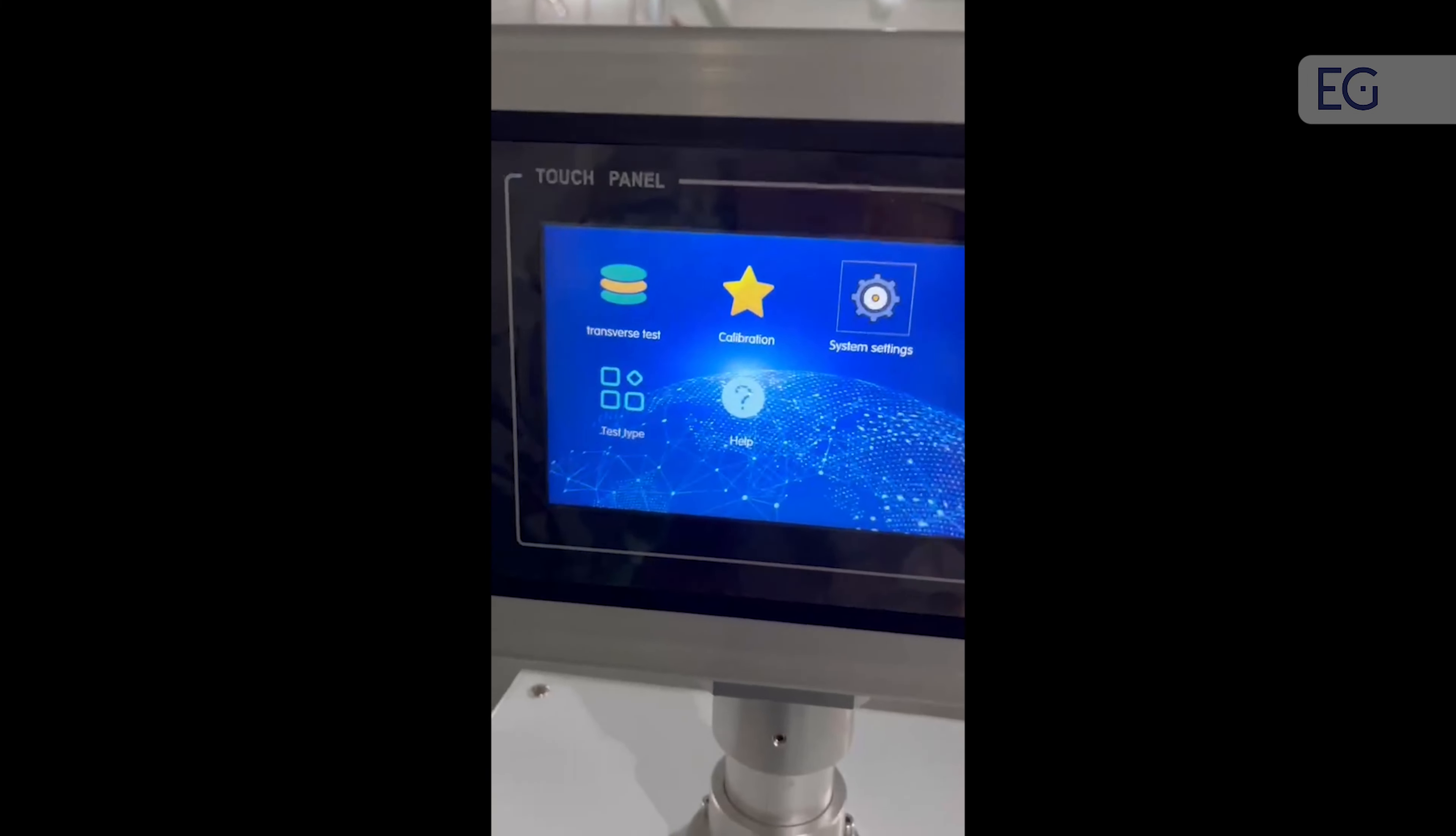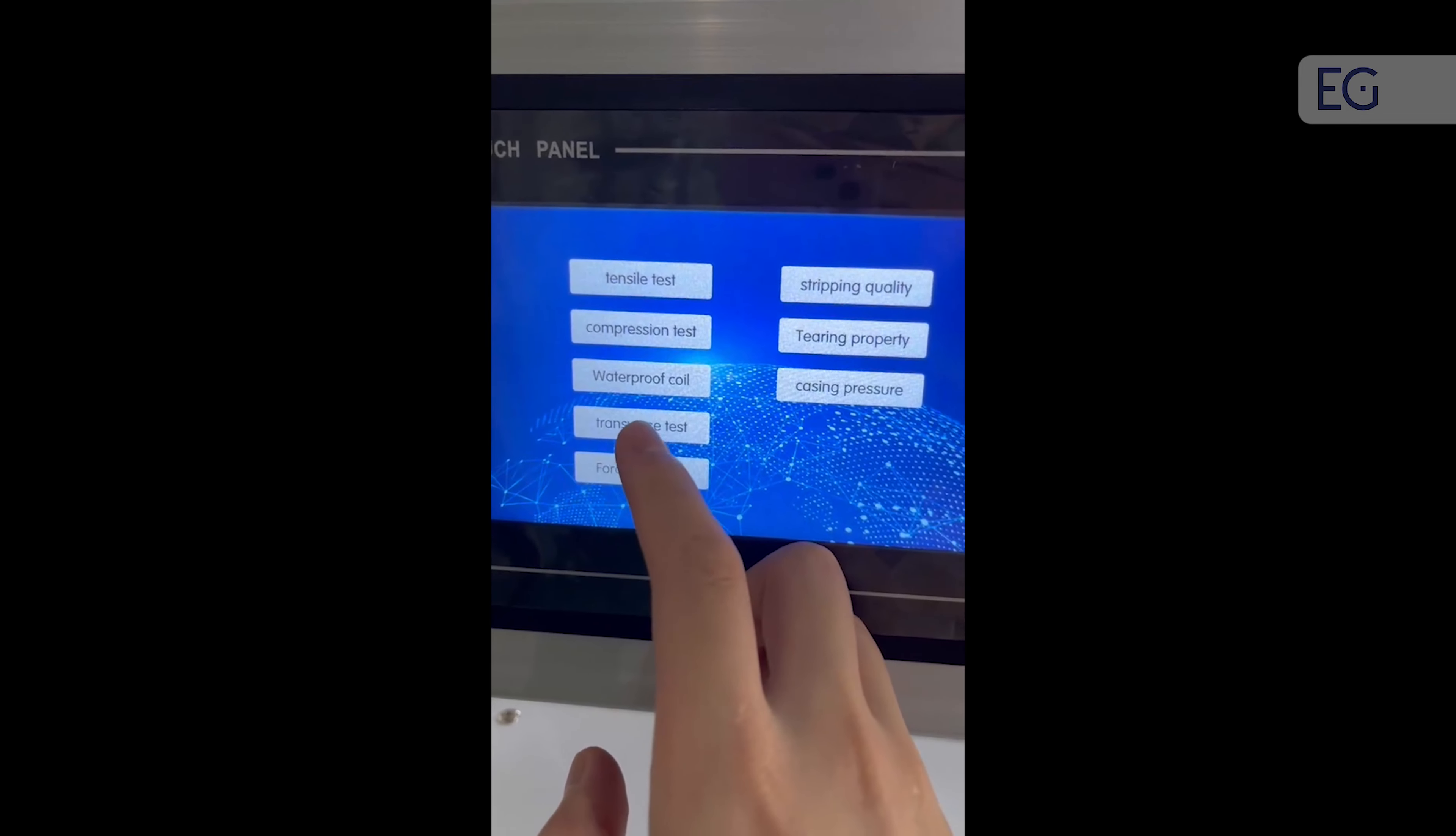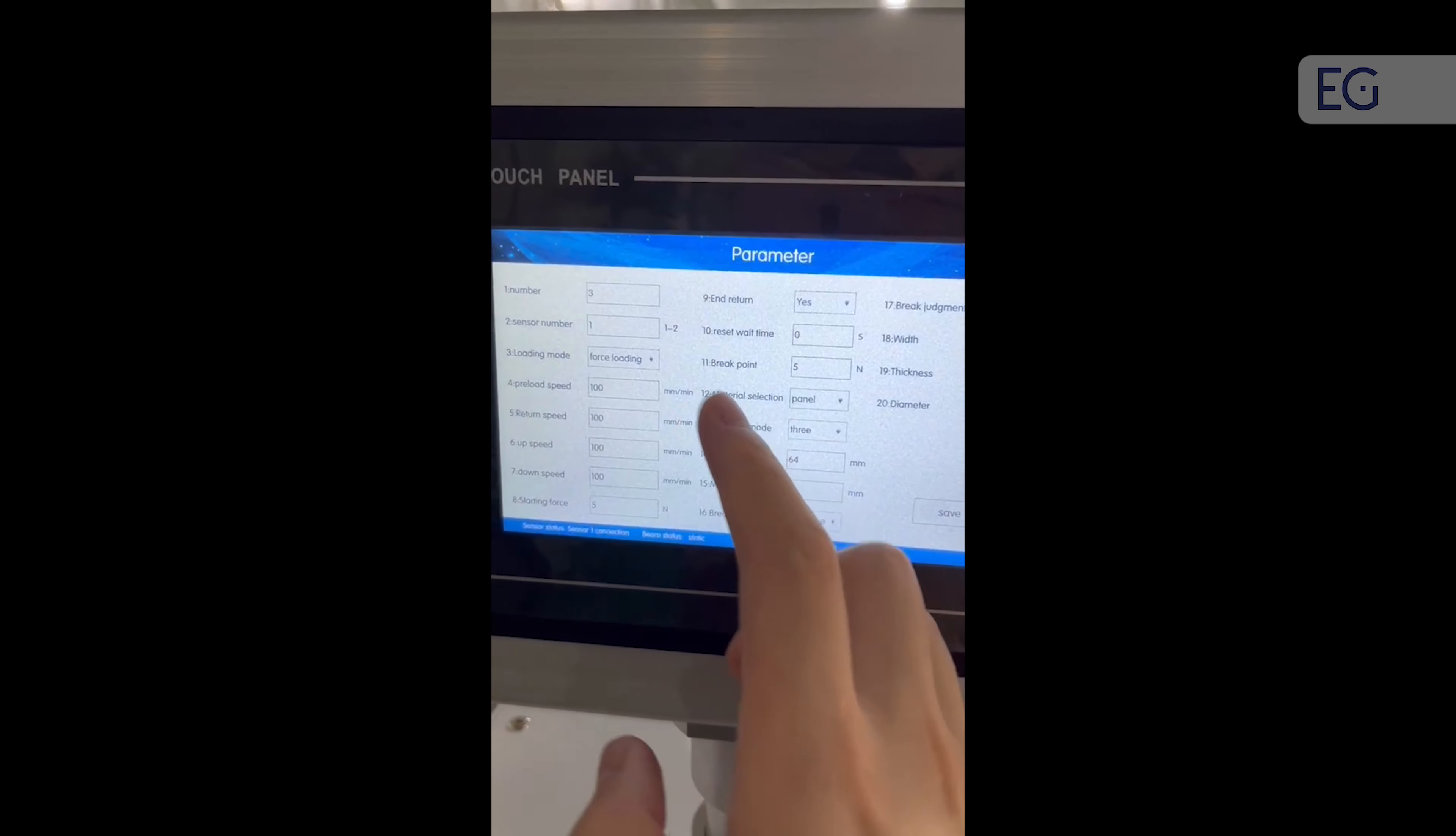And then we need to choose from the controller. We choose test type. This one is three-point bending test and we can set the parameter here.